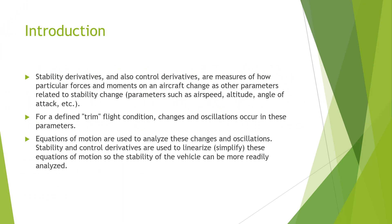A stability derivative measures how much change occurs in a force or moment acting on the vehicle when there is a small change in the flight condition parameter such as angle of attack, airspeed, altitude, etc. Such parameters are called states. A control derivative measures how much change occurs in a force or moment acting on the vehicle when there is a small change in the deflection of a control surface such as the ailerons, the elevator, and the rudder.